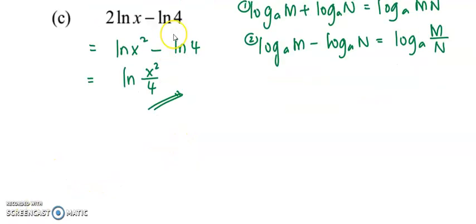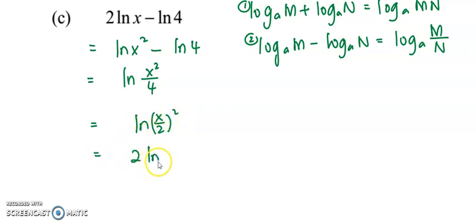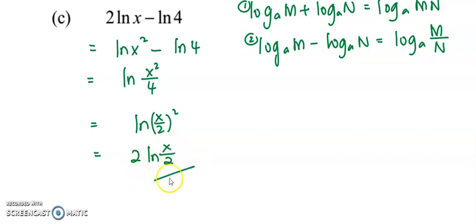If you would like to further simplify, you can write this as log of (x over 2) squared, and then bring the 2 to the front by applying the other rules of log, giving 2 log of x over 2.